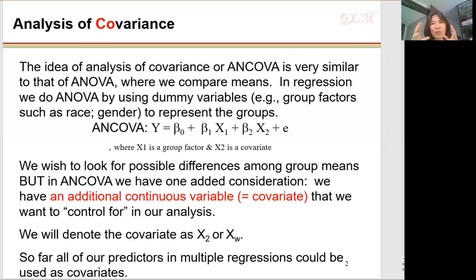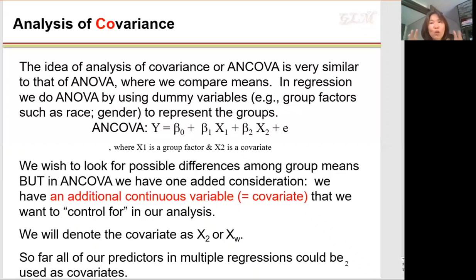When you have just one categorical variable as an independent variable in your model and you add one more continuous variable, it becomes an ANCOVA model. When you have two X variables — one categorical and one continuous — we call it an ANCOVA model. ANCOVA does not include the interaction between the categorical variable and the continuous variable; we will include interaction effects later.